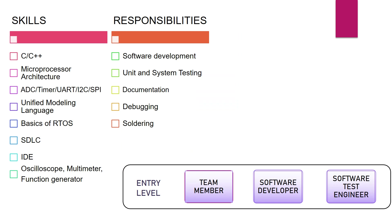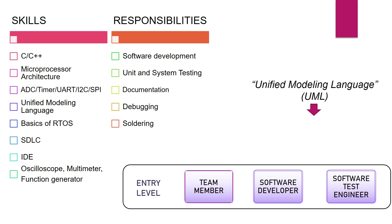At entry level, you will be a part of an Embedded Product Development team where the expectation would be that you should have good programming knowledge in C or C++. You must have some working knowledge with peripherals like ADC, Timer, and various communication protocols. At this level, you also need to have good understanding of various software development lifecycle models like Waterfall, V-model, and Unified Process, and you should be able to draw various UML diagrams to convey your ideas. A complete video tutorial series on Unified Modeling Language is available — the link can be found in the description of this video.